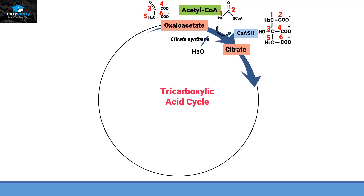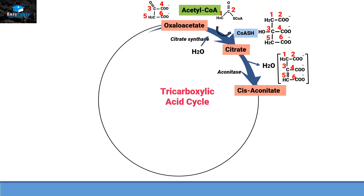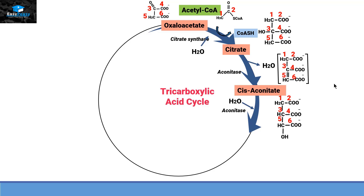Citrate, with the help of an enzyme called aconitase, will release a water molecule and convert itself into cis-aconitate. What happened is that OH from carbon number three and H from carbon number five are released as water, generating a double bond. Cis-aconitate with the same enzyme aconitase will take the water back and convert itself into isocitrate — the OH attaches to carbon number five and hydrogen to carbon number three — so citrate isomerizes into isocitrate.